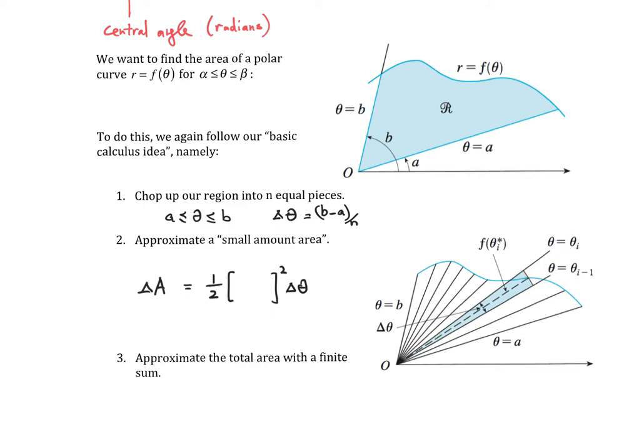We are going to determine our radius by evaluating our function at some point within this little interval. We're going to call that angle theta sub i star, and that's going to come from the mean value theorem. So we get f of theta sub i star, and that's going to play the role of our radius.